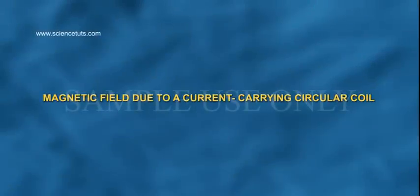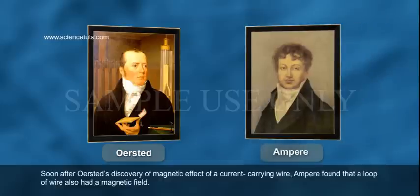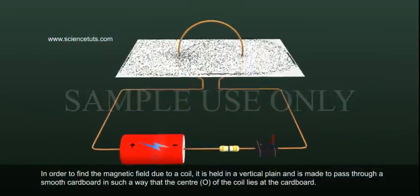Magnetic Field Due to a Current Carrying Circular Coil. Soon after Oersted's discovery of the magnetic effect of a current-carrying wire, Ampere found that a loop of wire also had a magnetic field. In order to find the magnetic field due to a coil,